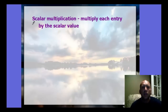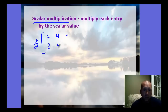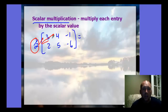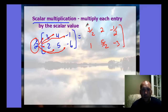Scalar multiplication is when you multiply the entire matrix by one value — a scalar — enlarging or dilating it. You multiply each entry by the scalar value, similar to the distributive property. For example, one-half times the matrix with entries 3, 4, negative 1, 2, 5, negative 6 gives: three-halves, 2, negative one-half, 1, five-halves, and negative 3.